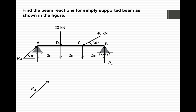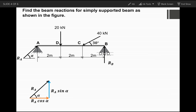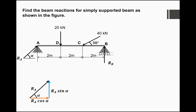First we will resolve Ra into its two components. Since Ra makes an angle of alpha with the horizontal, it has two components: the horizontal component Ra·cos(α), which is the adjacent component, and the vertical component Ra·sin(α), which is the opposite component.